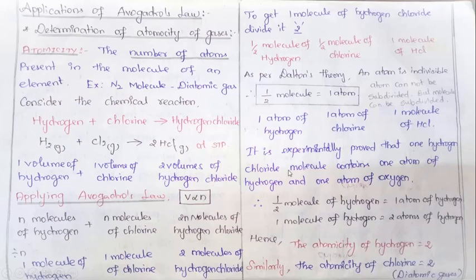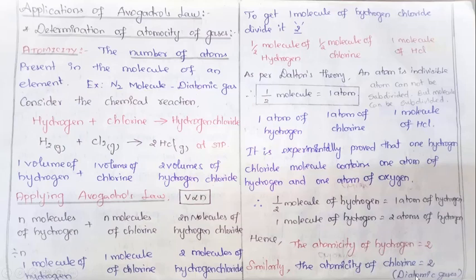From this it is experimentally proved that one hydrogen chloride molecule contains one atom of hydrogen and one atom of chlorine. So half a molecule of hydrogen is nothing but one atom of hydrogen, meaning one molecule of hydrogen contains two atoms of hydrogen. Hence the atomicity of hydrogen is two — we write it simply as H2. Similarly, half a molecule of chlorine is one atom, so one molecule of chlorine contains two atoms of chlorine. The atomicity of chlorine is also two. Both hydrogen and chlorine are diatomic gases.